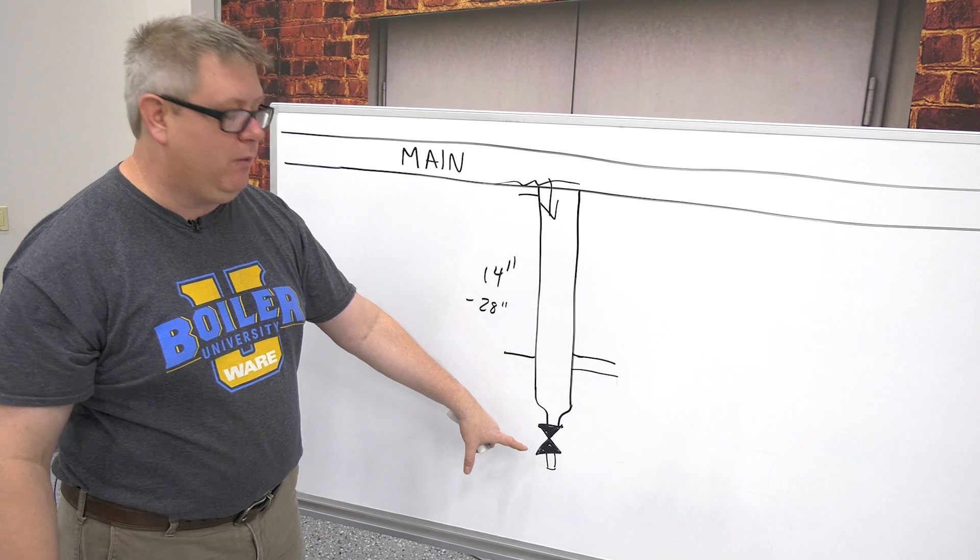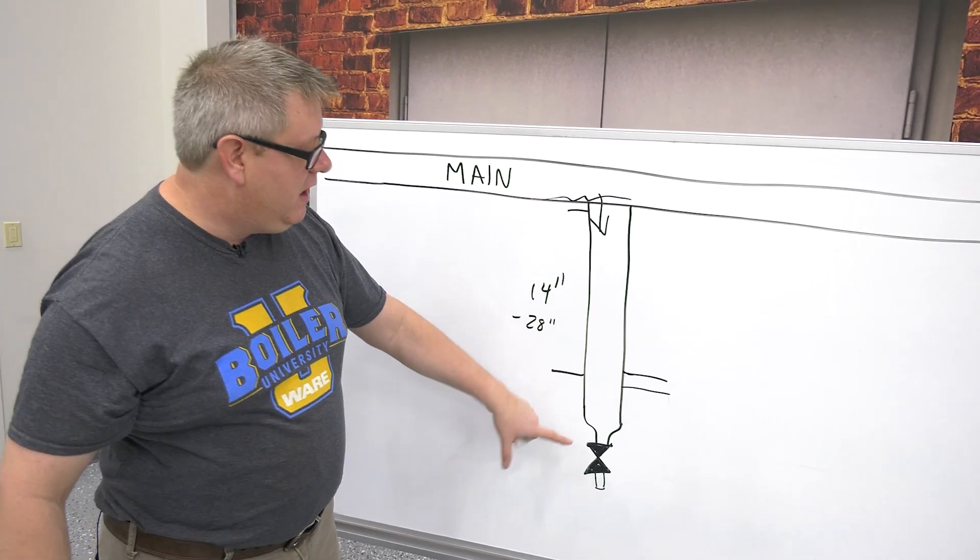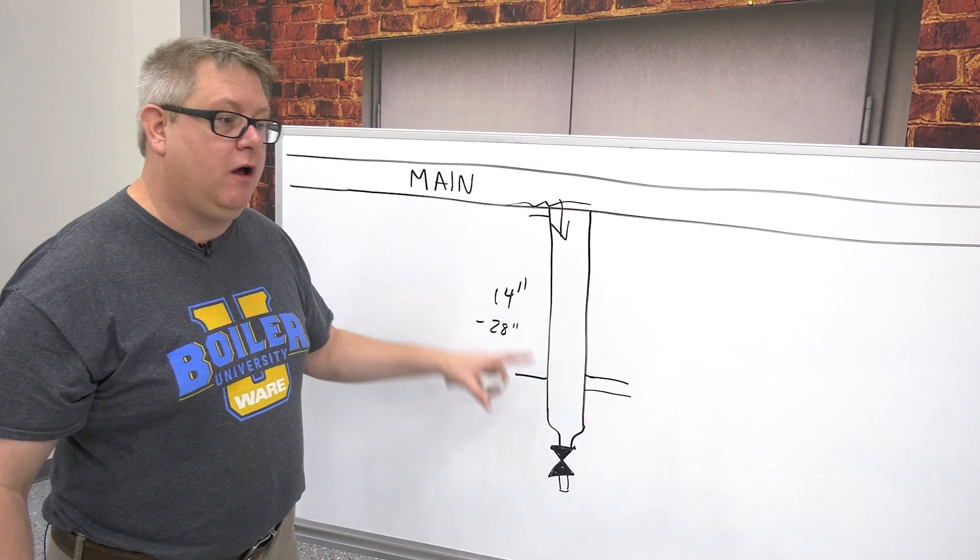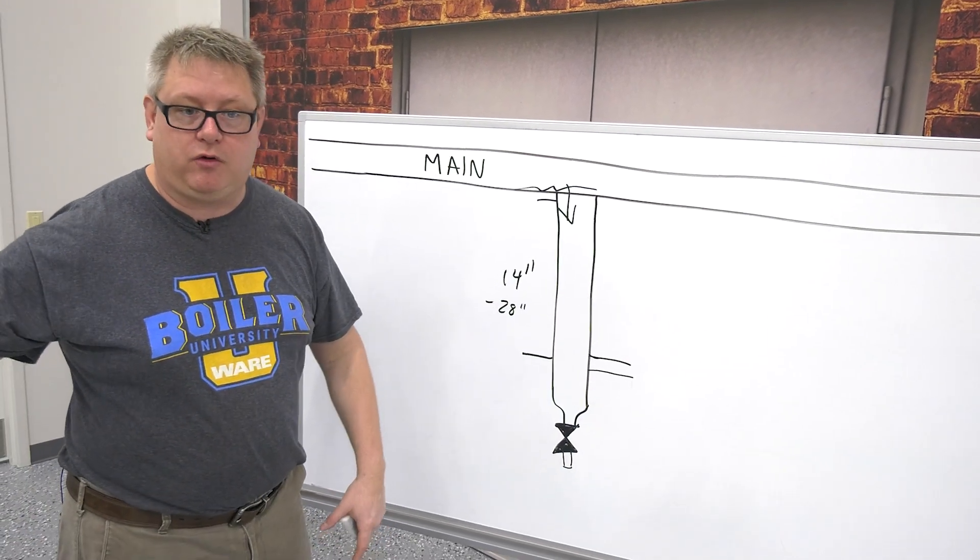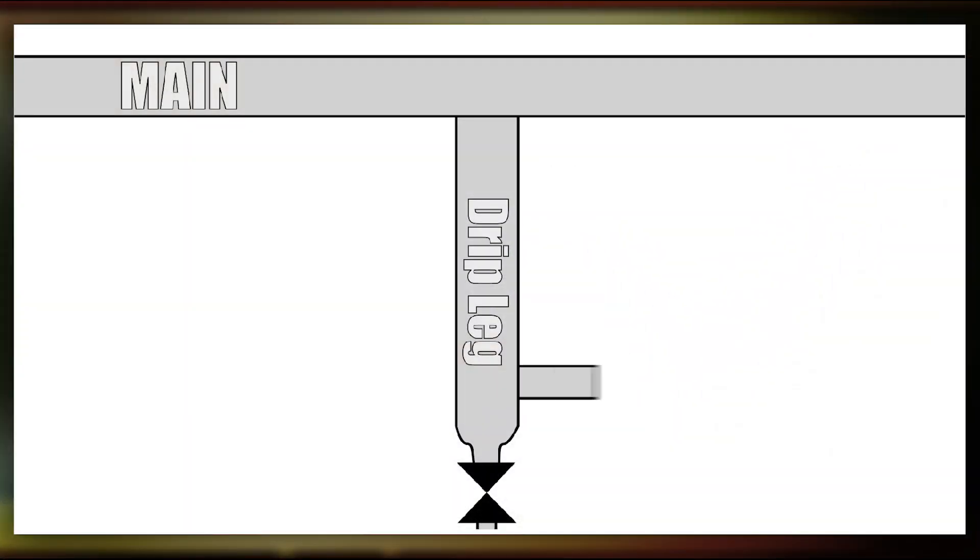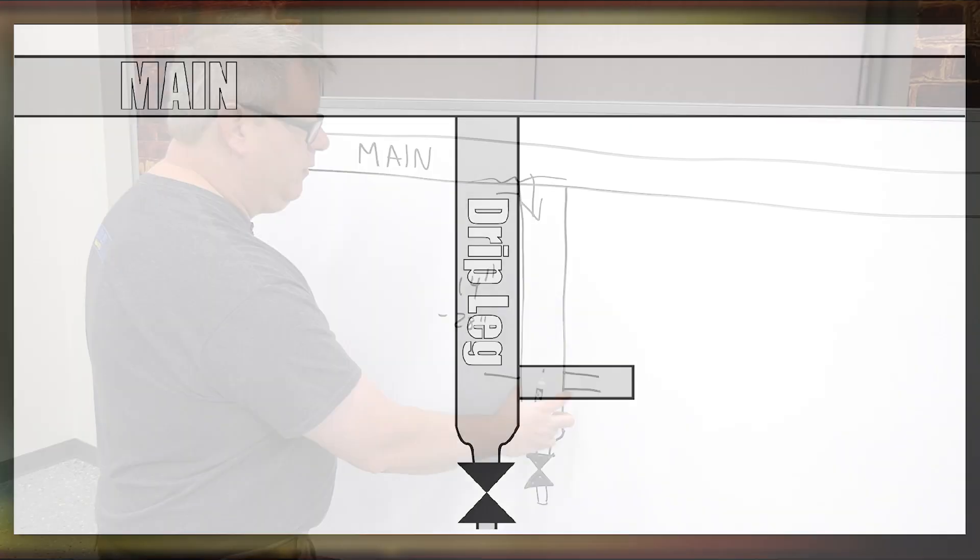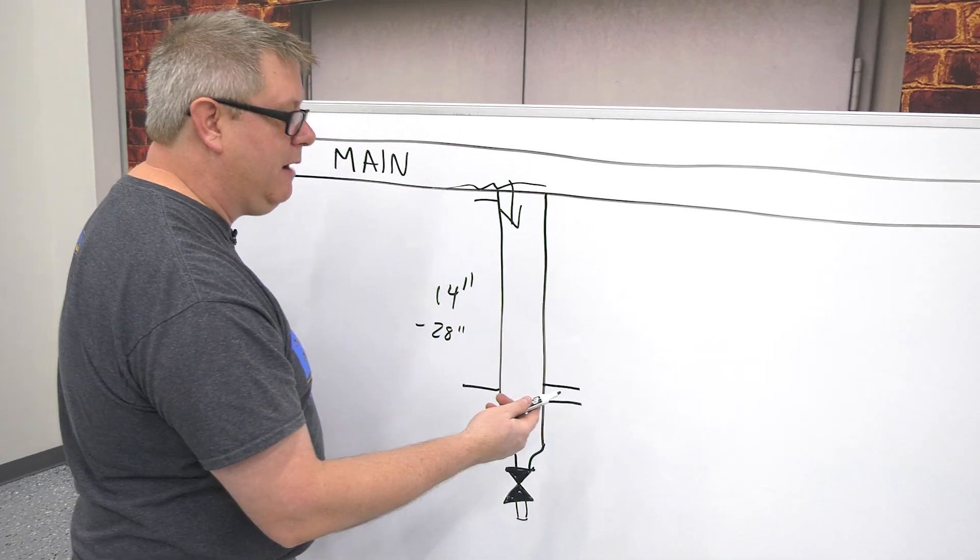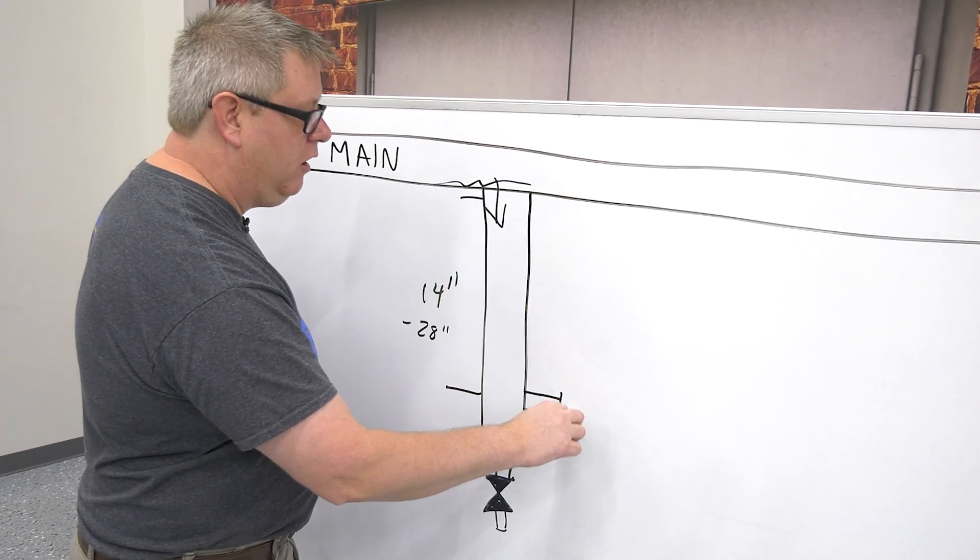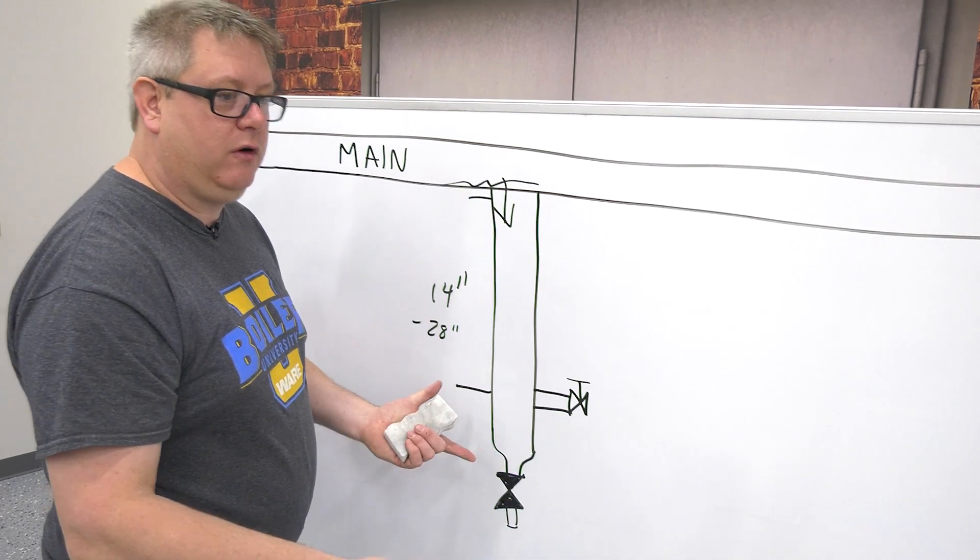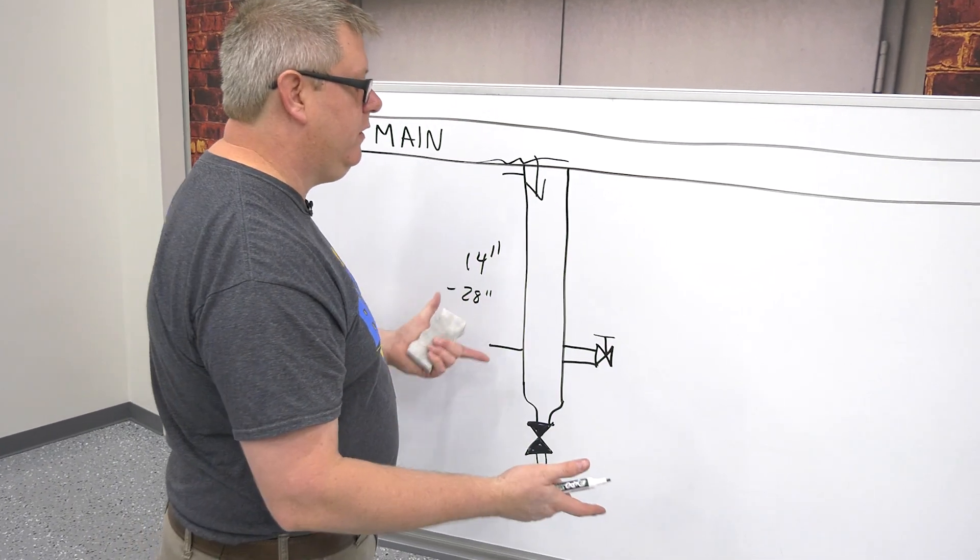So anytime we install a drip leg, we want to drain at the bottom, and in many cases we'll just have a drain and a plug in it. But we can also pipe that down to the floor ground level to make it more useful. So when we come off the side of the drip leg for our trap, we want to be off the bottom so we've got a pocket there for dirt so it doesn't go directly into our trap. And the first thing we're going to have on that takeoff for our trap is a manual isolation valve, and that's so we can service, do what we need to with this system.